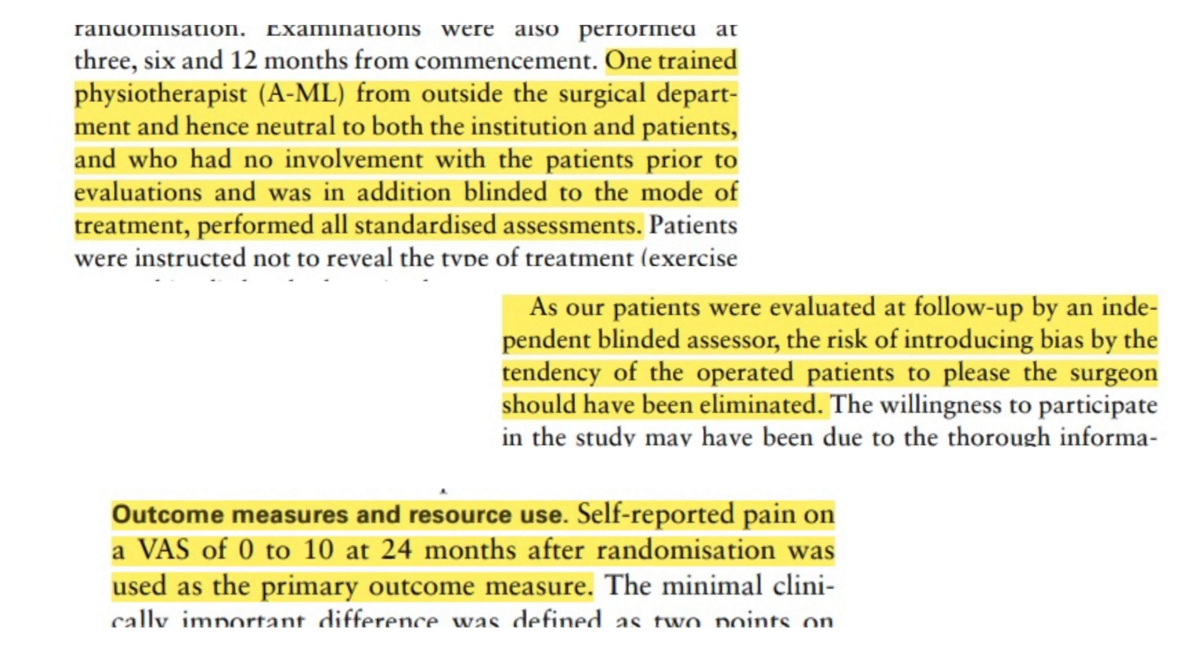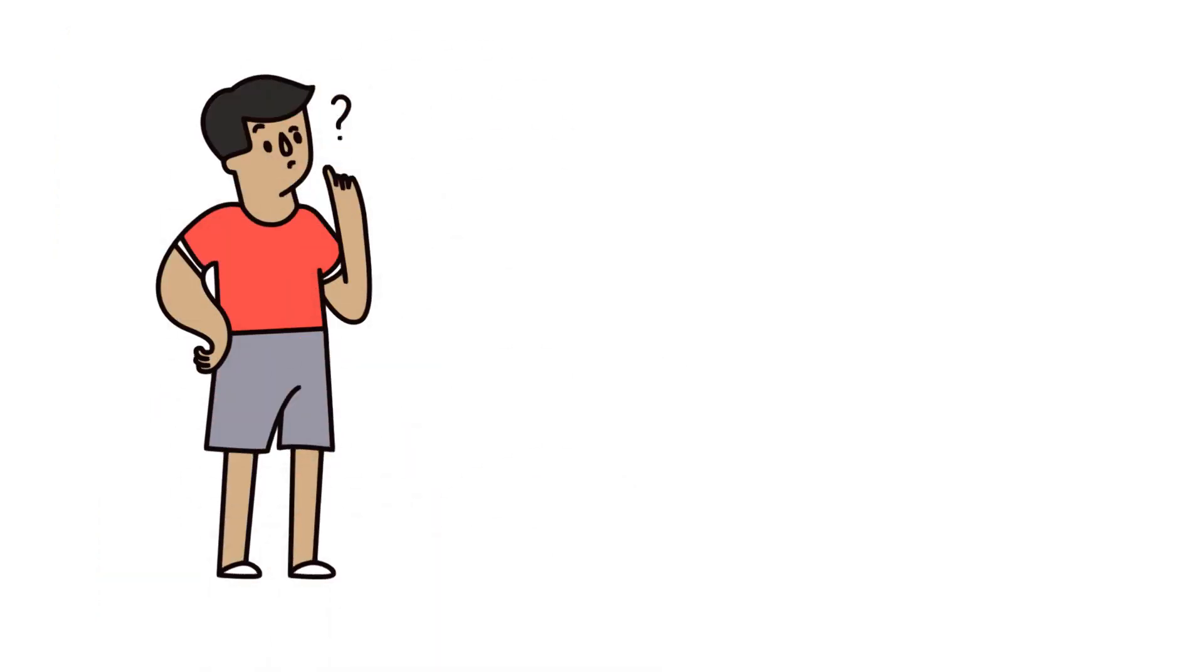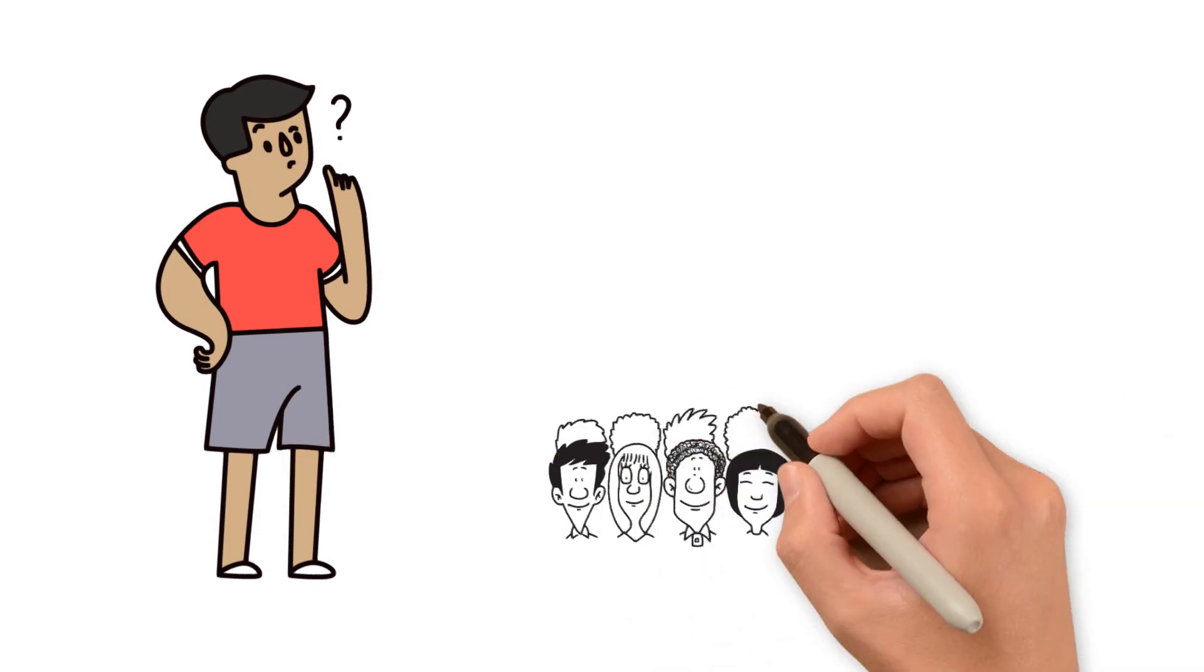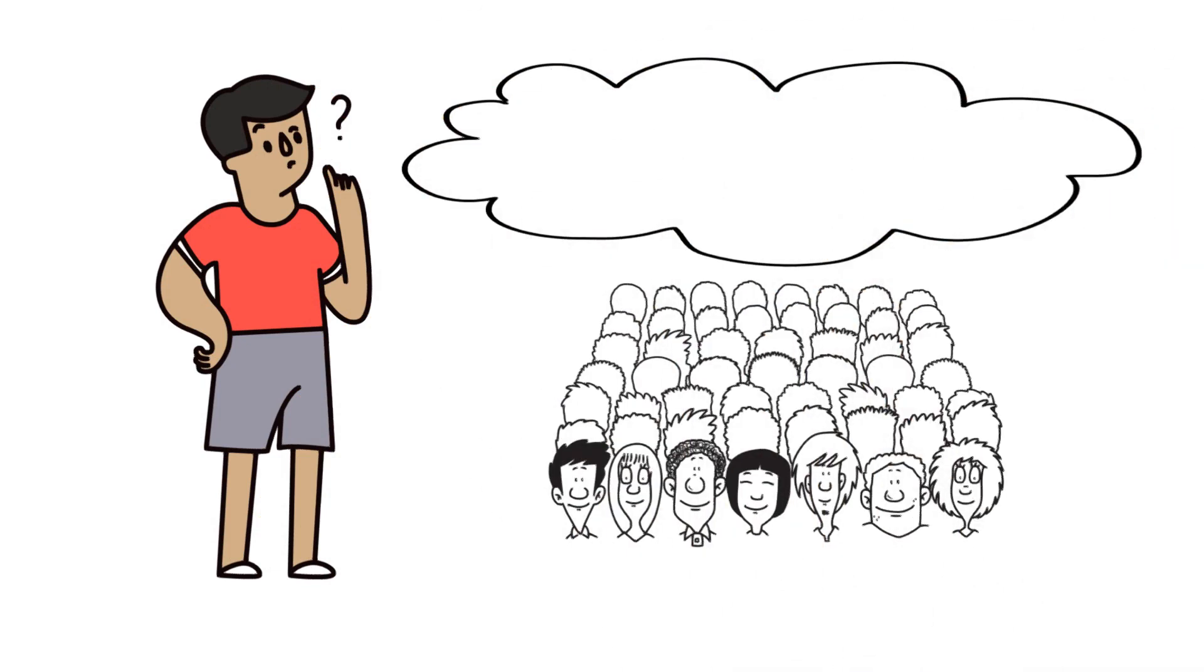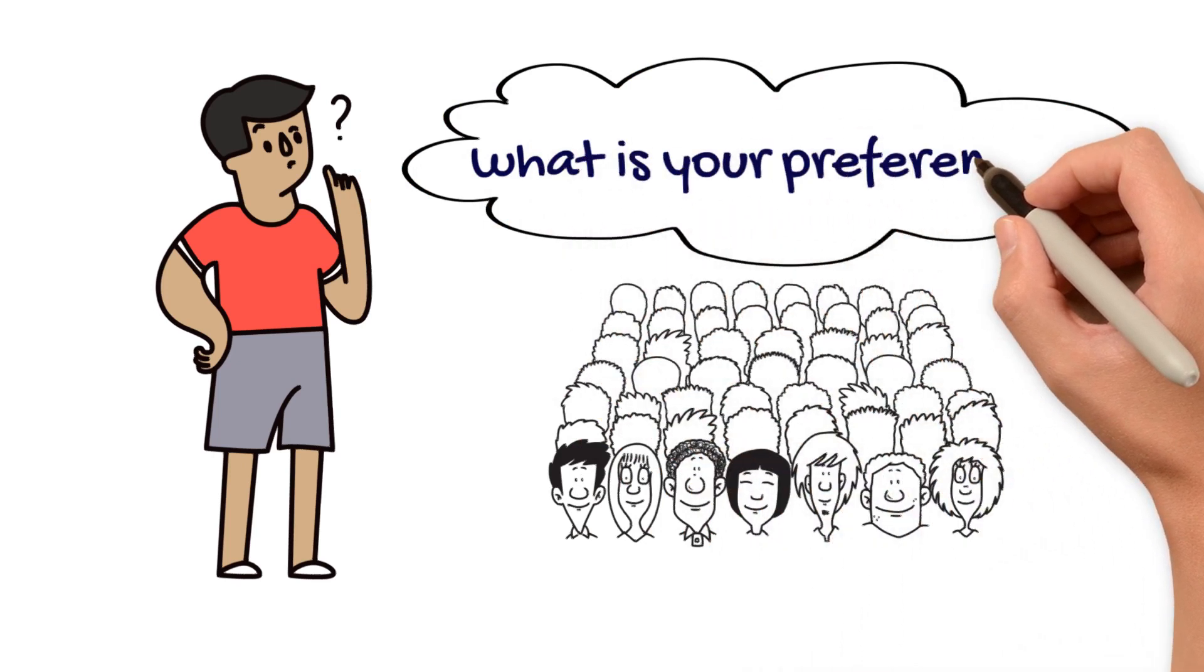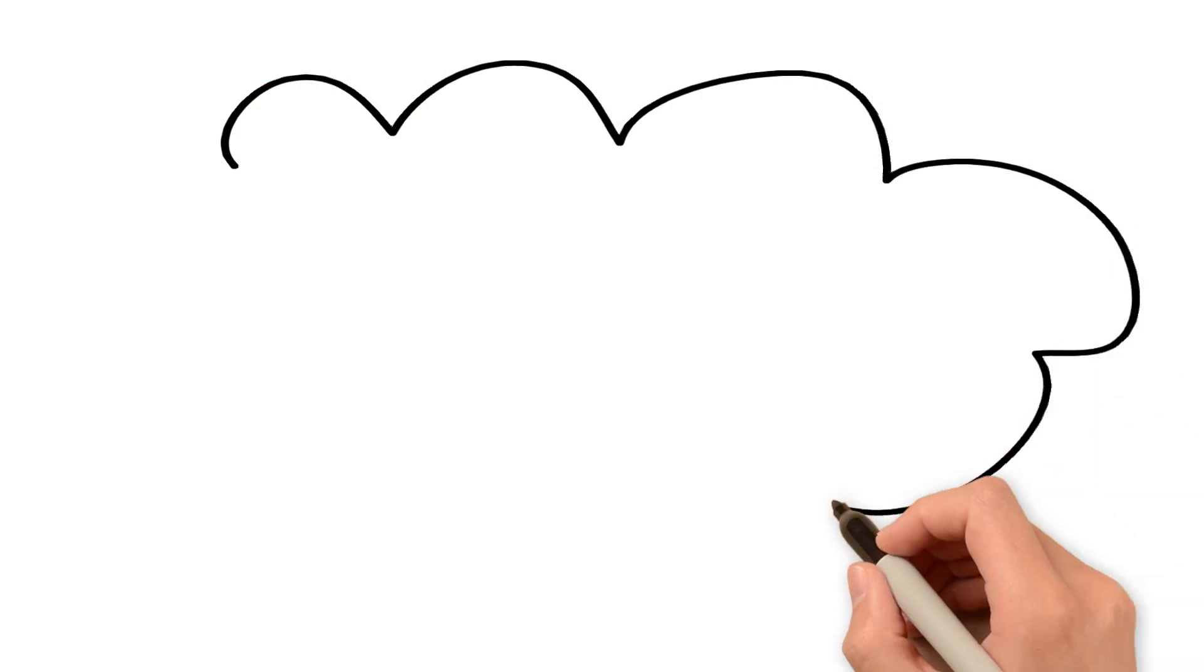There are ways that we can reduce bias though. In our example, participants will know which treatment they are receiving. So, to reduce bias, researchers can ask participants before they are randomized if they prefer one treatment or another. This can then be assessed and considered when interpreting the results.